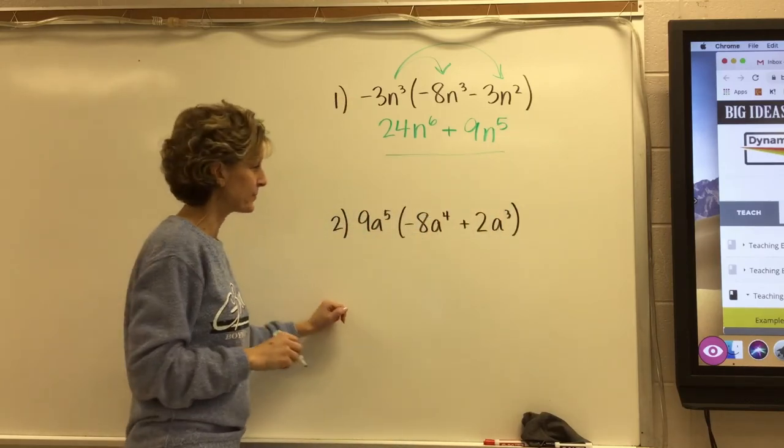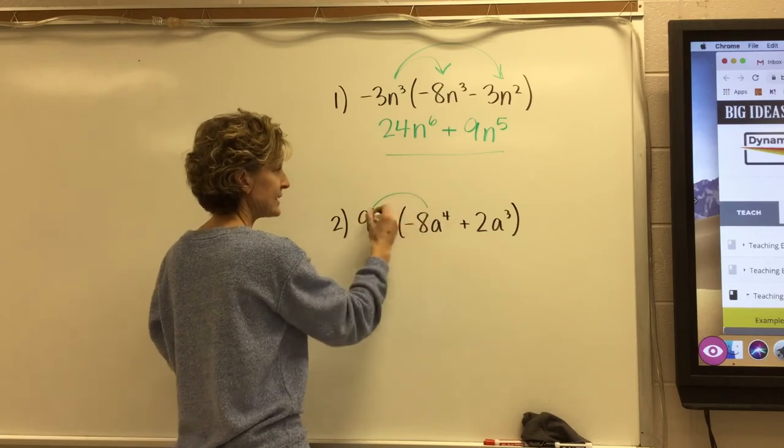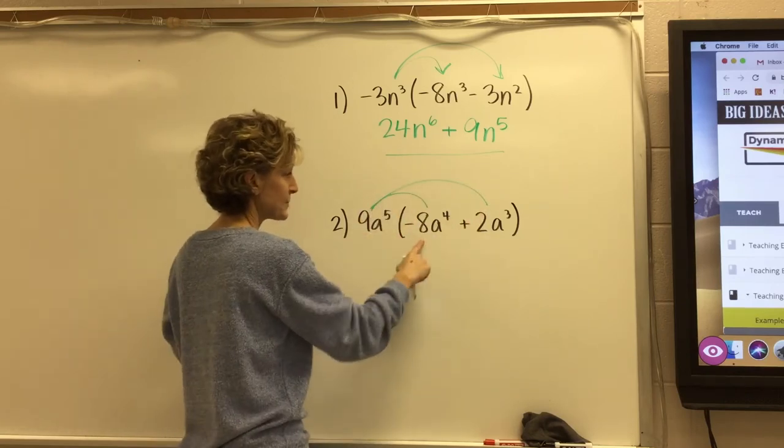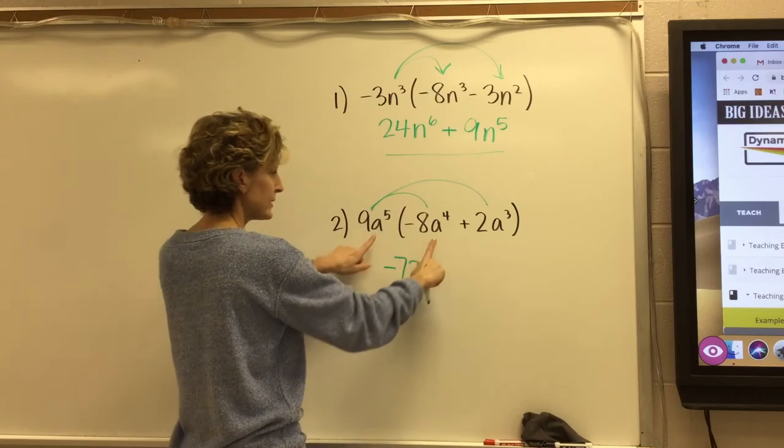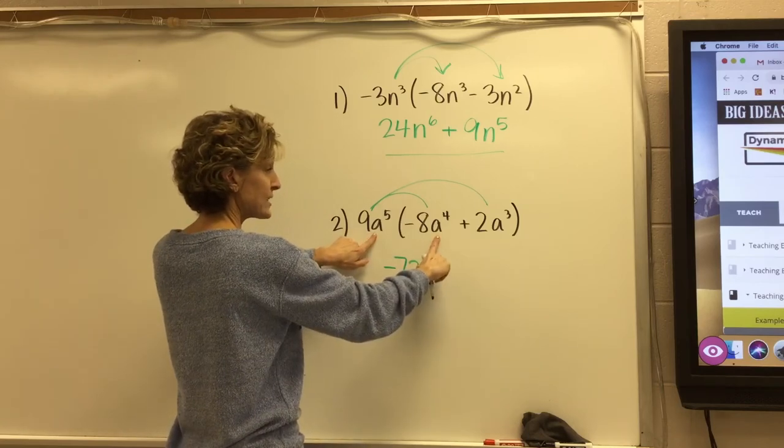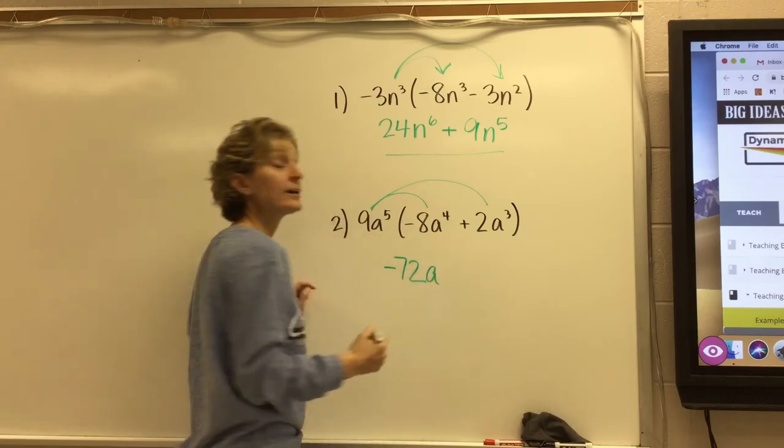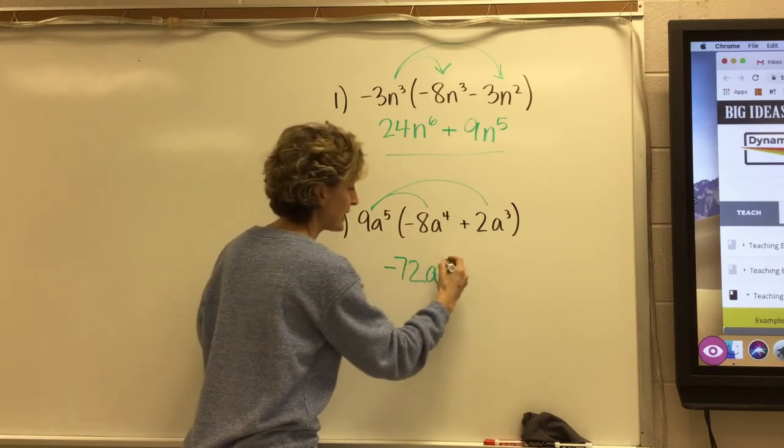Let's try it one more time. I'm taking this 4a squared. 9 times negative 8 is negative 72. a to the fifth times a to the fourth is a to the ninth. Add the exponents.